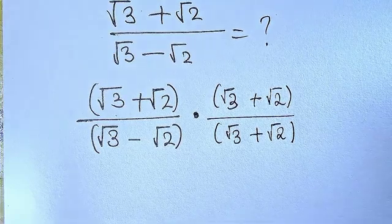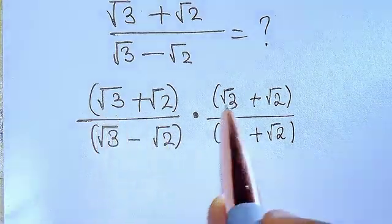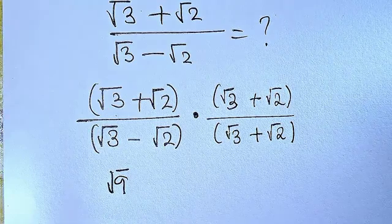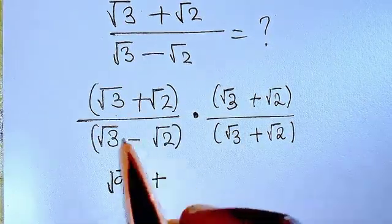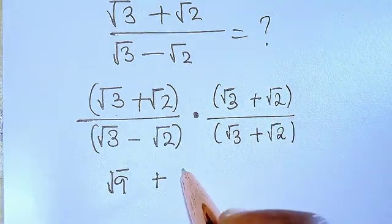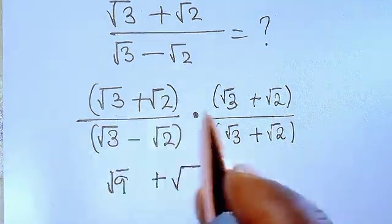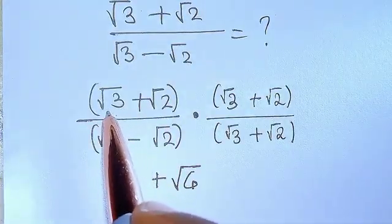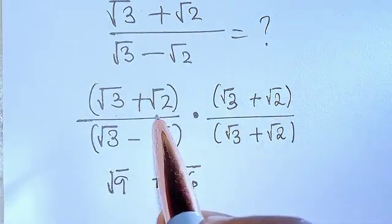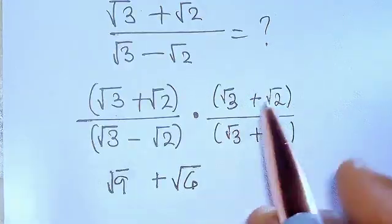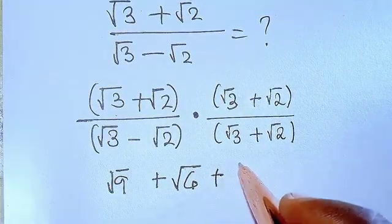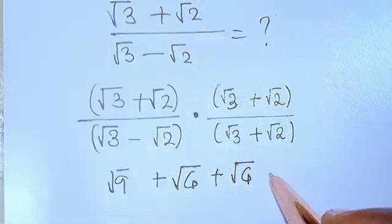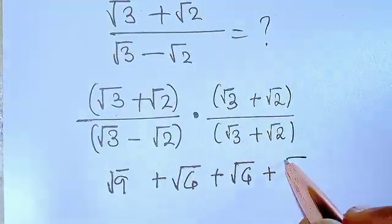So now we are going to be multiplying this by this. Root 3 times root 3 is going to give us root 9. Then root 3 times root 2 gives us root 6. We are done with using that first term to multiply everything. Then we take the second term, root 2. Root 2 times root 2 gives us root 4.